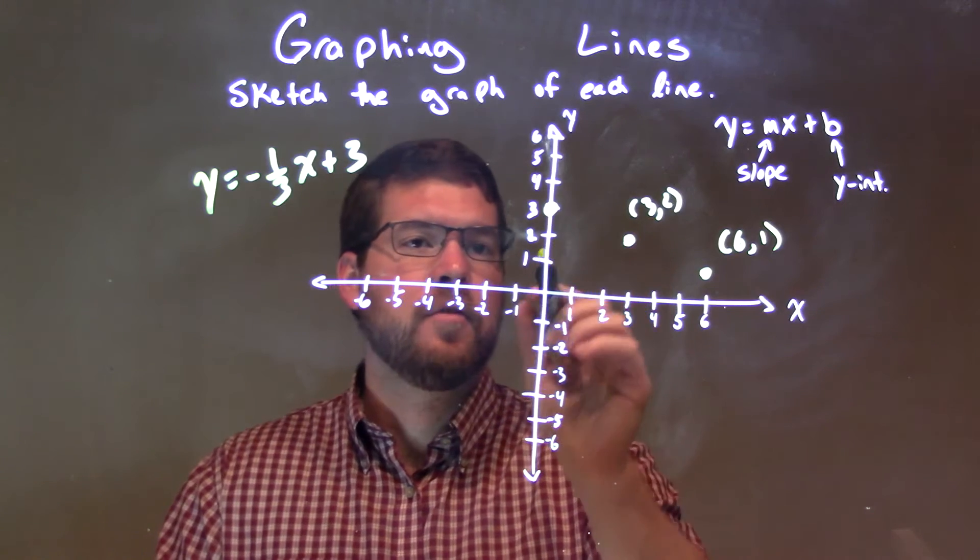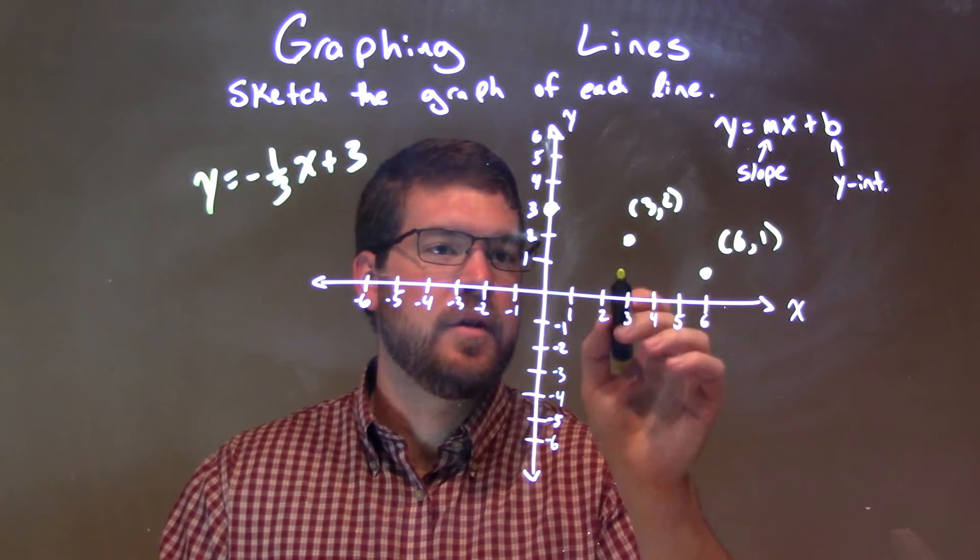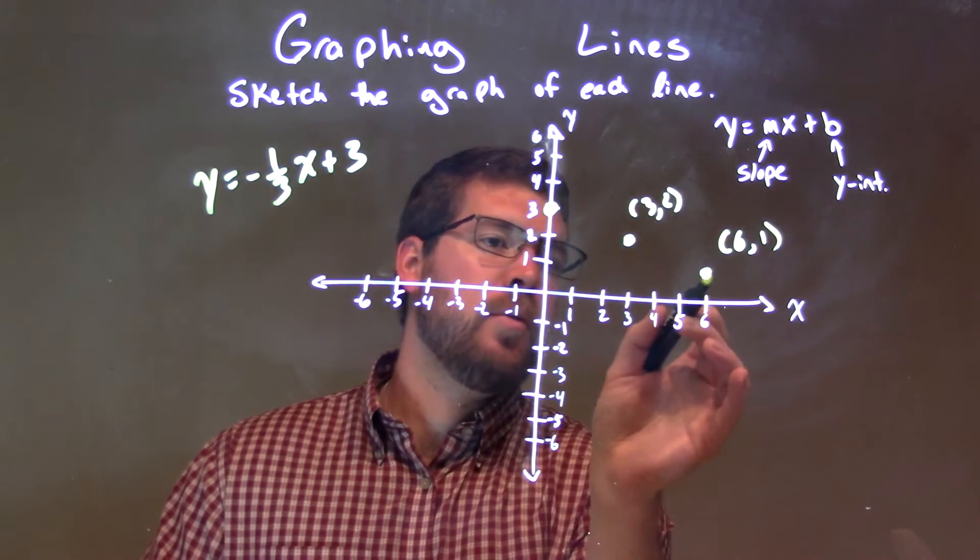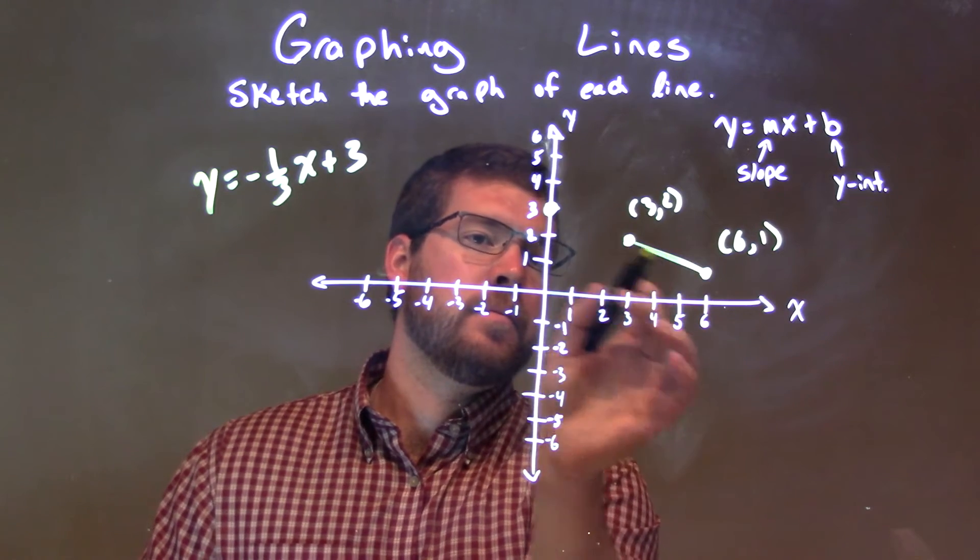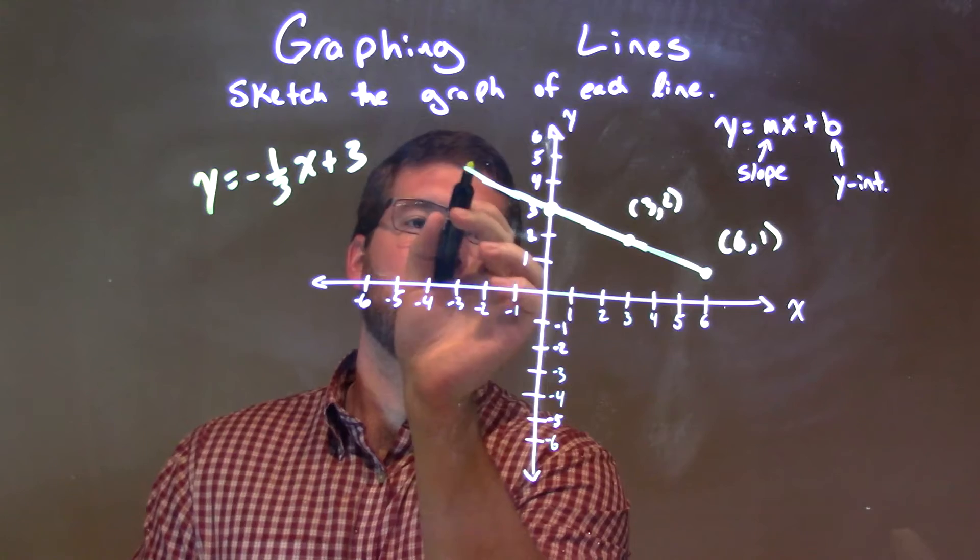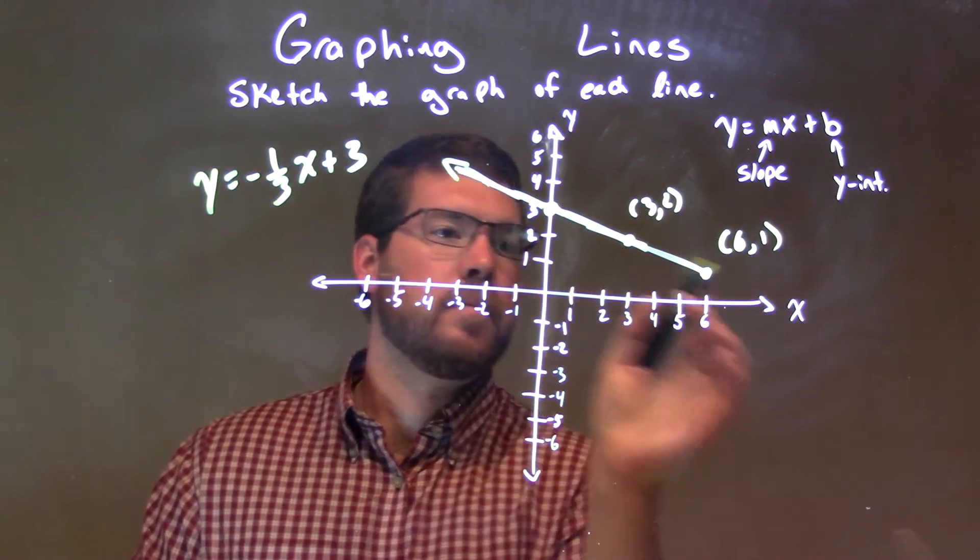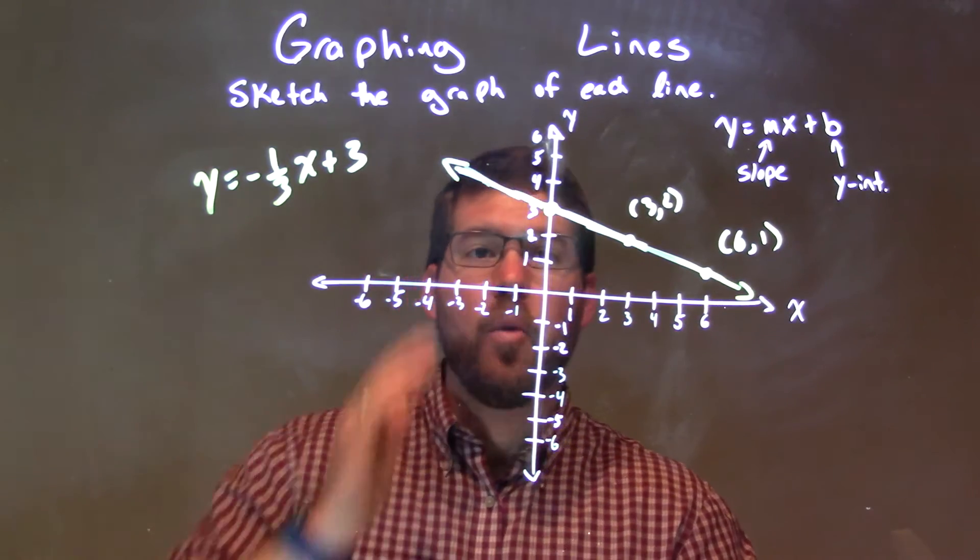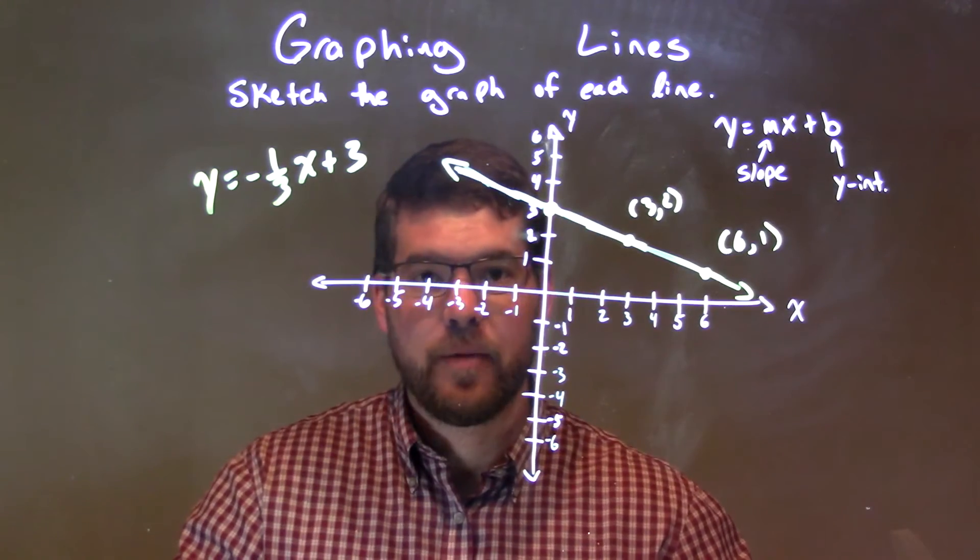Okay? So we have a slope of negative one-third, down one over three, down one over three. We have three points, so let's go connect them. And there we have it. We have our graph right there.